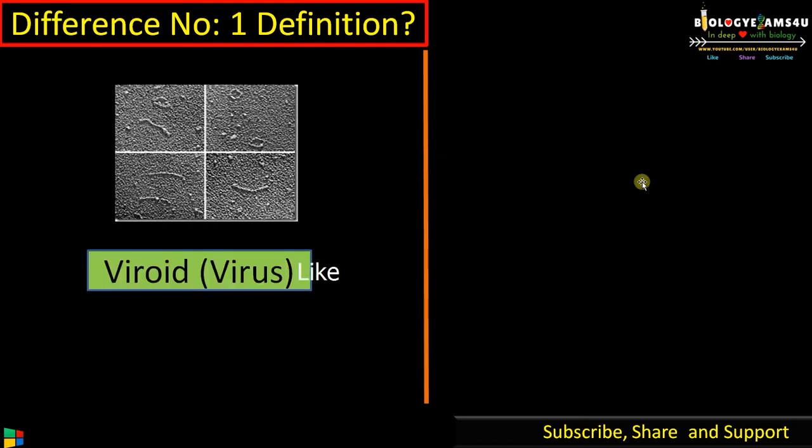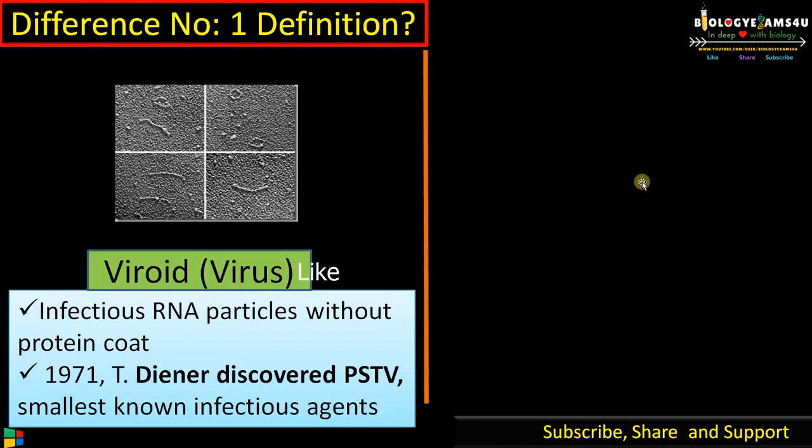Viroids are just virus-like. They were discovered by Diener. The first discovered was PSTV, or potato spindle tuber viroid, and he called it virus-like, or viroid. Viroids are infectious RNA particles without a protein coat. They are the smallest infectious agents.